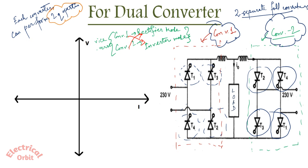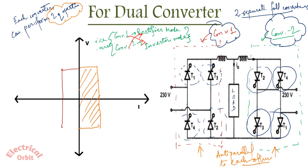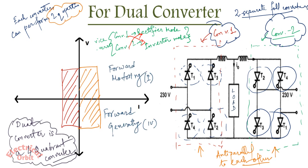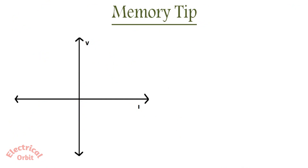The thyristors at converter 1 and converter 2 are anti-parallel to each other, so these two separate converters are not working at the same quadrant. If converter 1 can operate at quadrant 1 and 4, converter 2 operates at quadrant 2 and 3. So a dual converter is a four-quadrant converter where all four modes are available: forward motoring, forward generating, reverse generating, and reverse motoring.